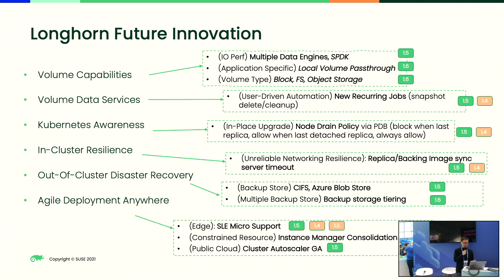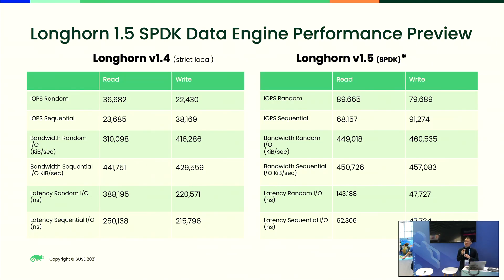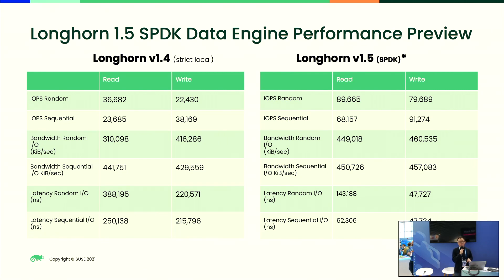So volume capability, data service, Kubernetes awareness, in-cluster resilience, out-of-cluster disaster recovery, and agile deployment anywhere — these are our major innovation pillars for LongHorn's future. Next, I want to share quickly what we have done so far for 1.5: the next generation data plane based on SPDK. You can see the performance comparison between version 1.4 and the upcoming 1.5 — it shows a lot of improvement in IOPS, latency, and throughput. This is the answer LongHorn gives to users who care about better performance IO. So I think that's it — this is what I wanted to share about LongHorn's future and current status. Thank you.